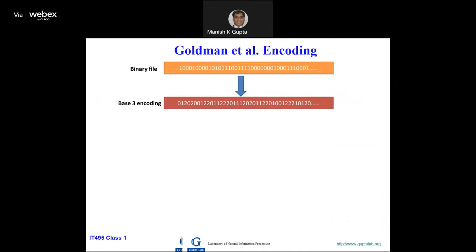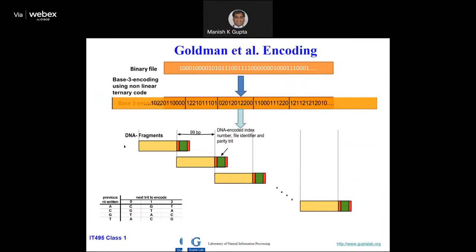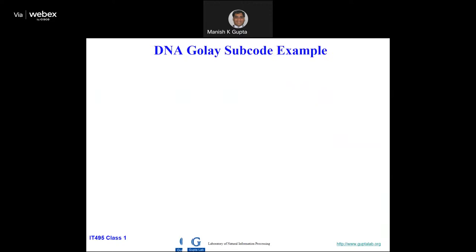The Goldman architecture used base-3 encoding. Everything is converted to DNA, then DNA fragments are made with fourfold redundancy. They used a beautiful map — I'll explain how it works. We also used the same map but replaced everything with ternary Golay code and made chunks of length 99. Let me show you the example.